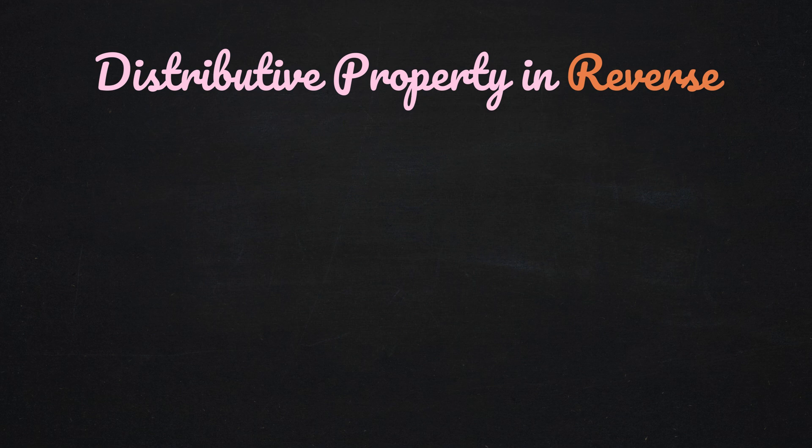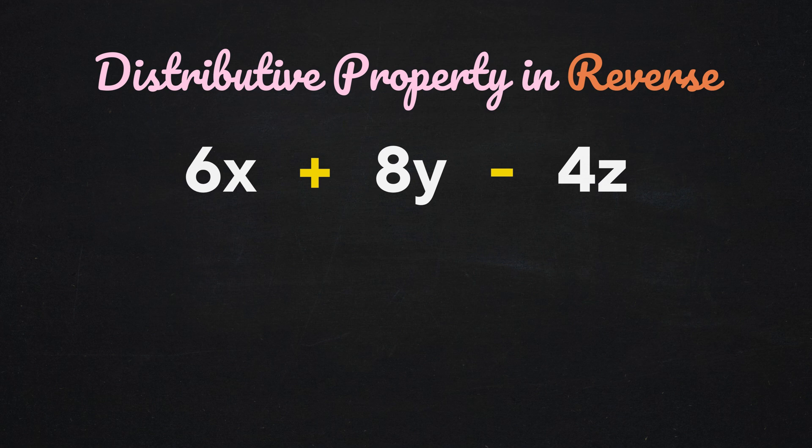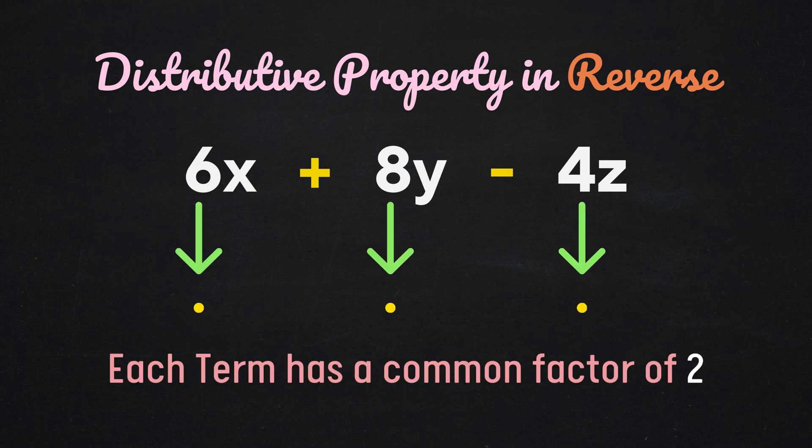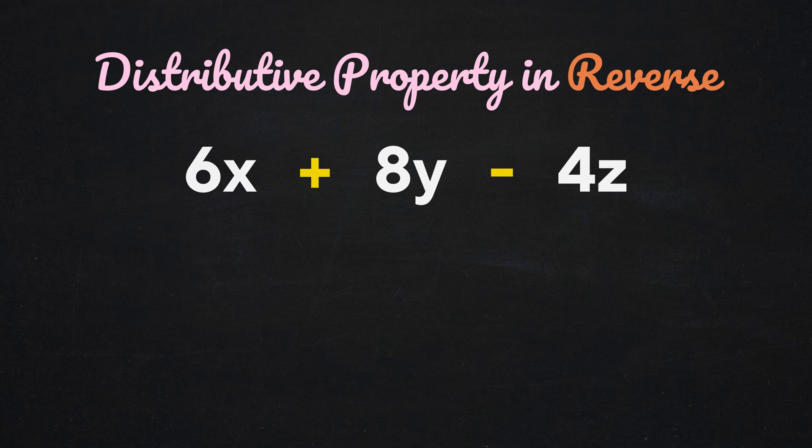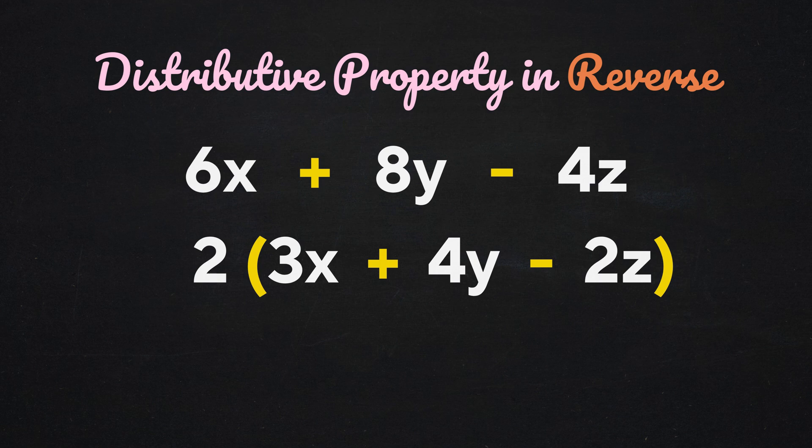Sometimes the common factor may not be so obvious. Consider 6x plus 8y minus 4z. At first glance, you may not find a common factor, but upon close observation, we can figure out that each term has a factor of 2. So if we want, we can factor out the common factor 2 and rewrite the expression as 2 multiplied by the group of 3x plus 4y minus 2z.